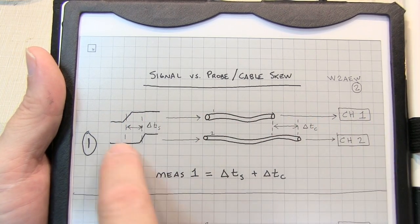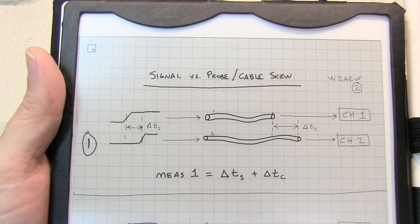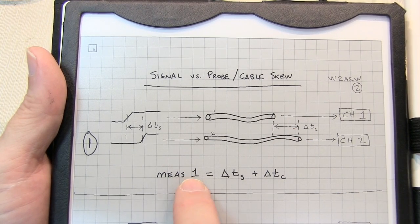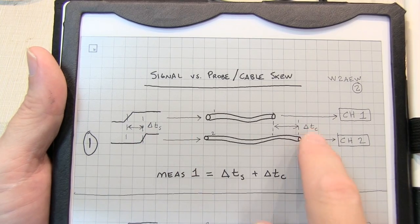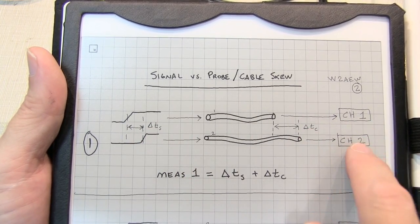So, we hook all these up, this signal down through to channel 1, this signal through channel 2, through these cables. When we make this measurement, the measurement is actually going to be the sum of this delay and that delay. That's the delay we're going to measure on the scope.